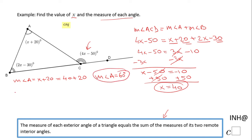Let's take a look at the measure of angle B, which is 2x minus 30. That means 2 times 40 minus 30, which will be 80 minus 30, and that will be 50. So angle B is 50 degrees.